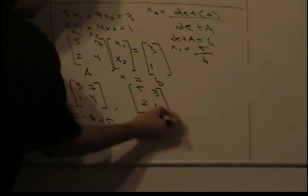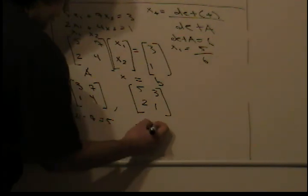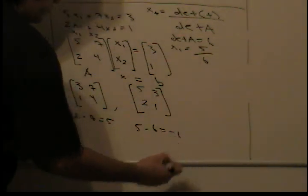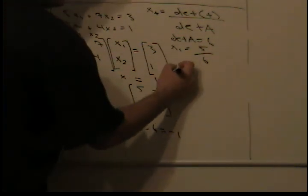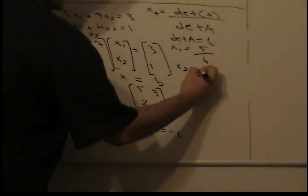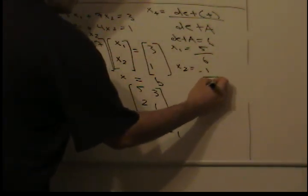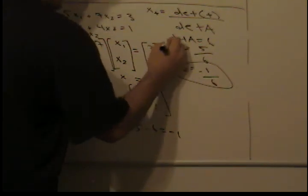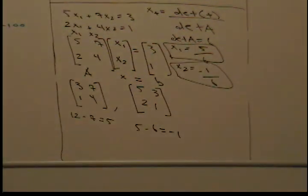Right, so now we just find the determinant of this, which is 5 minus 6, which is negative 1. So finally, x2 equals negative 1 over 6, and we just find values for x1 and x2 without row reduction.